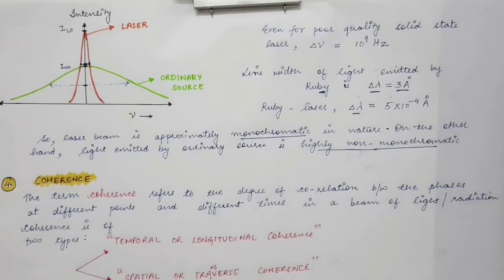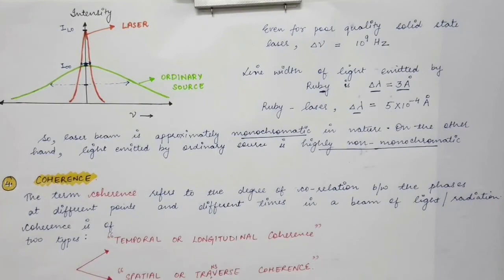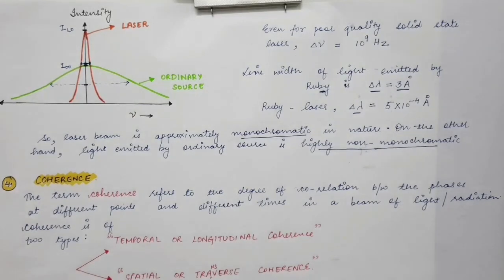In the next lecture, we will discuss coherence — that the light from a laser is highly coherent, while in the case of ordinary light sources, the light is incoherent.